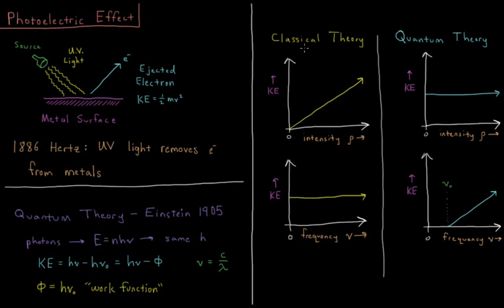The problem that Einstein solved was that according to classical theory, as the intensity of the radiation increases—as more and more photons pour down onto the surface—classical theory said that the kinetic energy of the radiation was dependent on the intensity of the light. As the light gets more intense, the electrons would be faster as they go away from the surface.